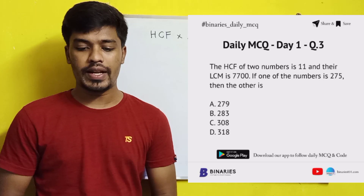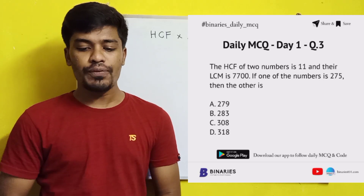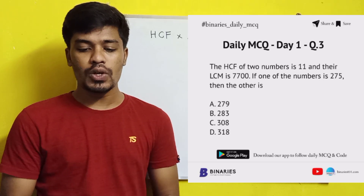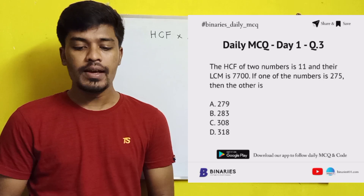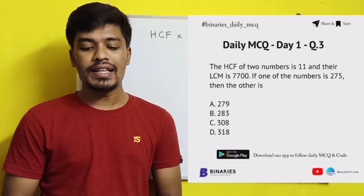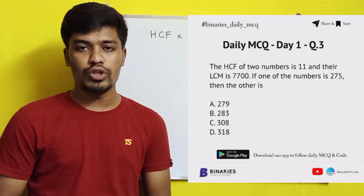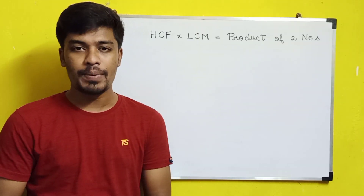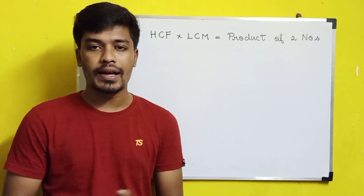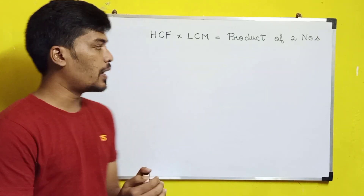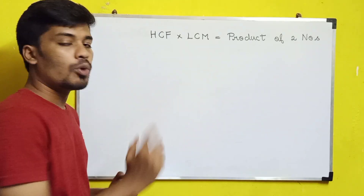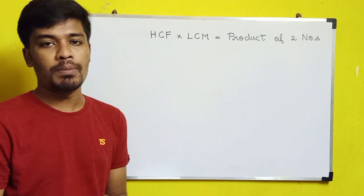The third question is very easy. The HCF of two numbers is 11 and their LCM is 7700. If one of the numbers is 275, find the other number. The formula is: HCF × LCM = Product of the two numbers.